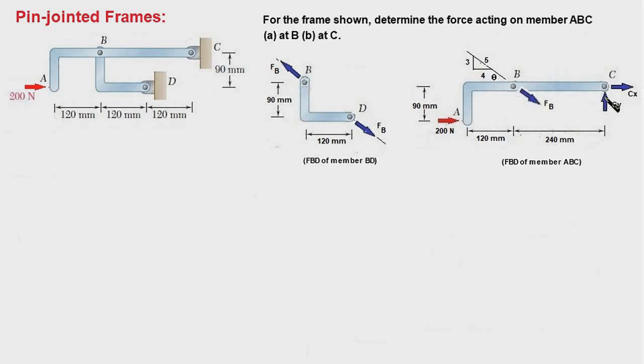In addition, there are two support reactions in horizontal and vertical directions named CX and CY, and this is the externally applied force at A. So this completes the FBD of member ABC.